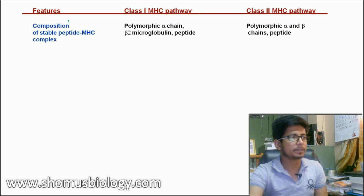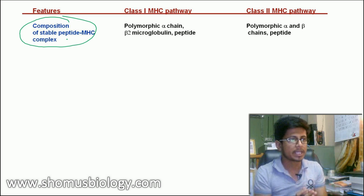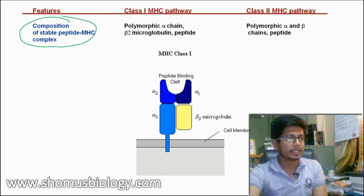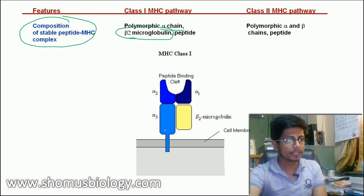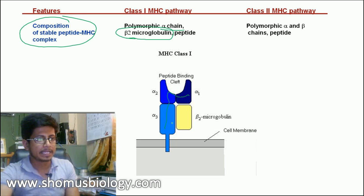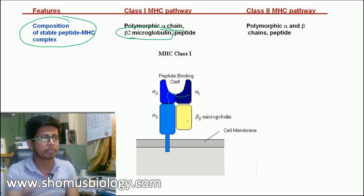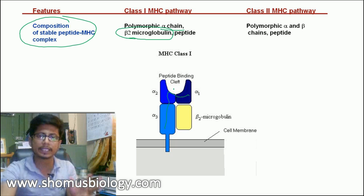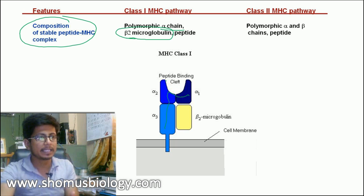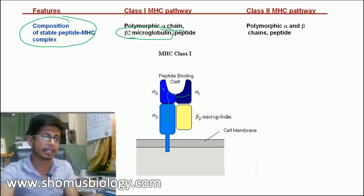Now let's look at the differences between MHC class 1 and class 2 in different properties. The first difference is composition. In MHC class 1, there is a polymorphic alpha chain and a beta-2 microglobulin chain. The beta-2 microglobulin is a small fragment that resembles the structure of immunoglobulin. Both chains together form a peptide binding cleft, also called an antigen binding cleft, which is used to present antigen fragments to immune cells.